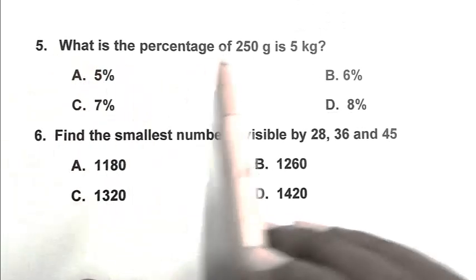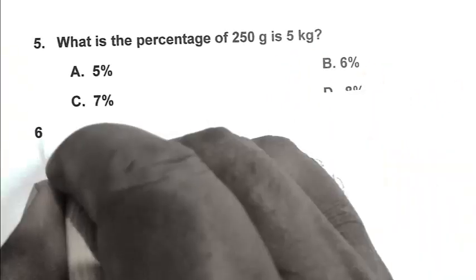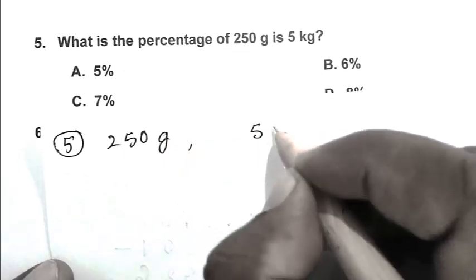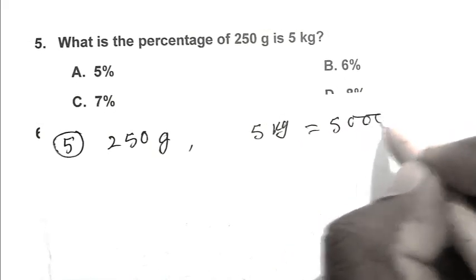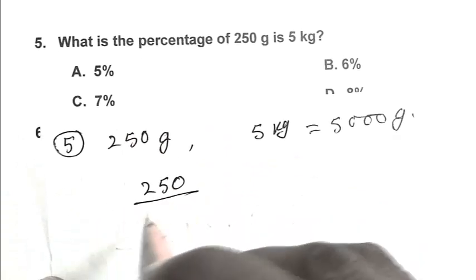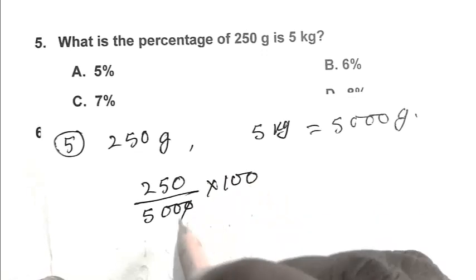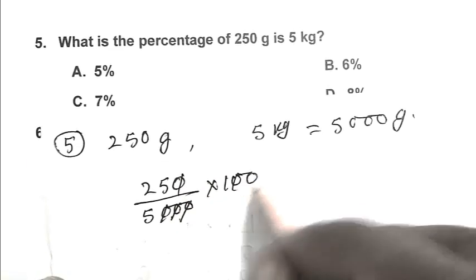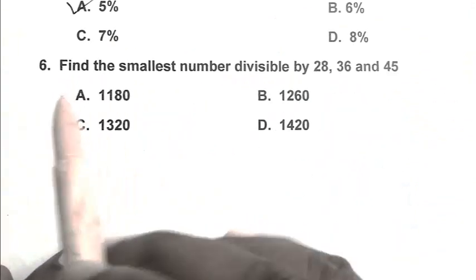Question number 5: What is the percentage of 250 grams of 5 kilograms? We convert 5 kilograms to 5000 grams. The percentage is 250 upon 5000 multiplied by 100, which equals 5%. So A is the right answer.